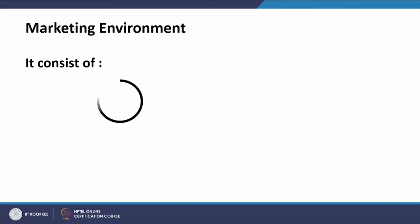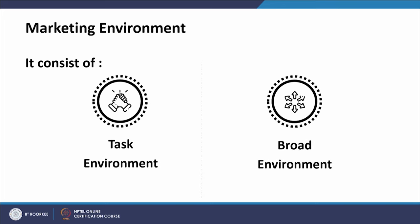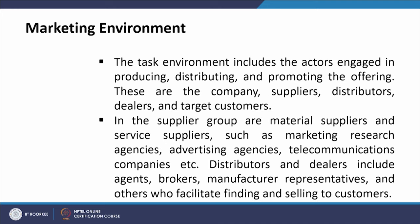The marketing environment consists of the task environment and the broad environment. The task environment includes the actors engaged in producing, distributing, and promoting the offerings — these are the company, suppliers, distributors, dealers, and target customers. In the supplier group are material suppliers and service suppliers such as marketing research agencies, advertising agencies, and telecommunication companies. Distributors and dealers include agents, brokers, manufacturers' representatives, and others who facilitate finding and selling to customers.